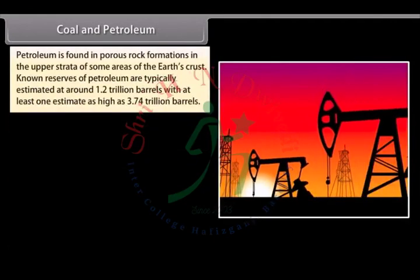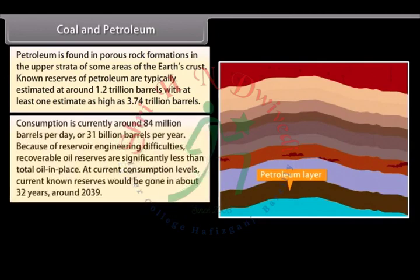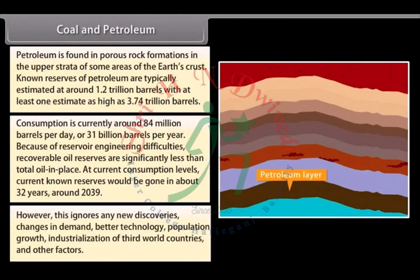Petroleum is found in porous rock formations in the upper strata of some areas of the earth's crust. Known reserves of petroleum are typically estimated at around 1.2 trillion barrels, with at least one estimate as high as 3.74 trillion barrels. Consumption is currently around 84 million barrels per day or 31 billion barrels per year. At current consumption levels, current known reserves would be gone in about 32 years, around 2039 — though this ignores new discoveries, changes in demand, better technology, population growth, and industrialization of developing countries.